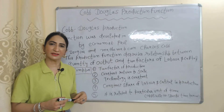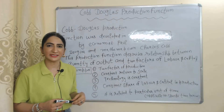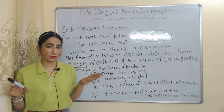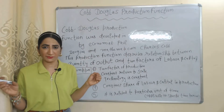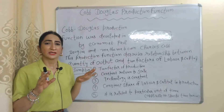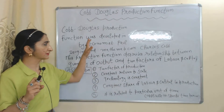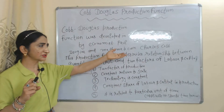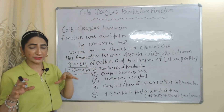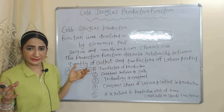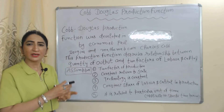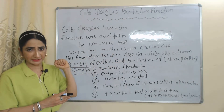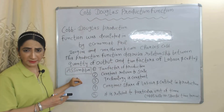Hello everyone, my name is Mini Sethi. I hope you all are staying healthy. Today we are going to talk about the Cobb-Douglas production function. This production function was given by economist Paul Douglas and mathematician Charlie Cobb, and it mainly describes the relationship between quantity of output and two factors of production: labor and capital.